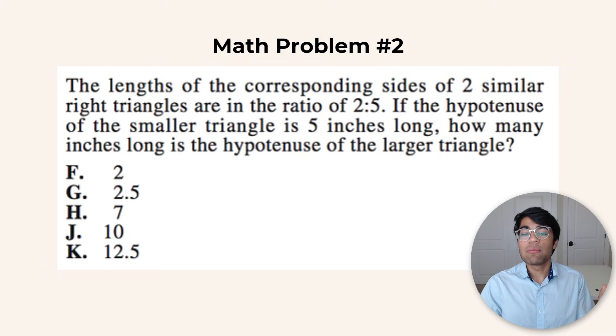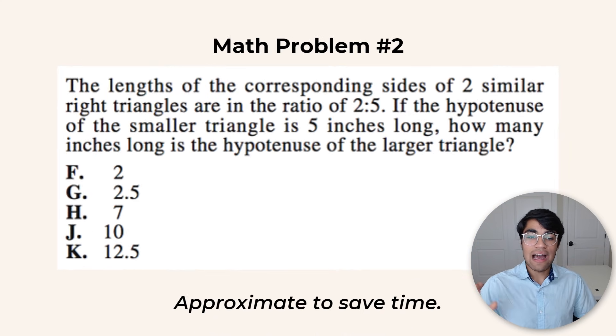But we know it's slightly bigger, so we get to 12.5. Usually the ACT will have answer choices in between or over that so it doesn't allow you to approximate this way, but there are often questions like this where you can use approximation.